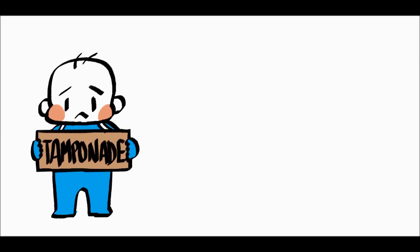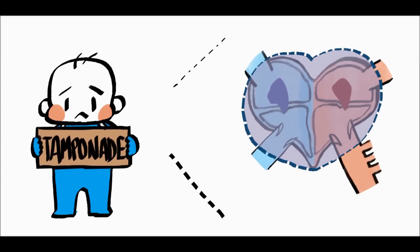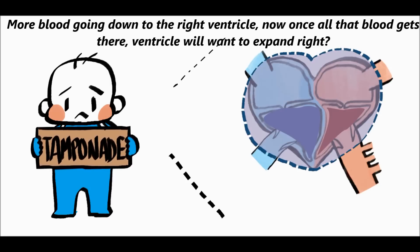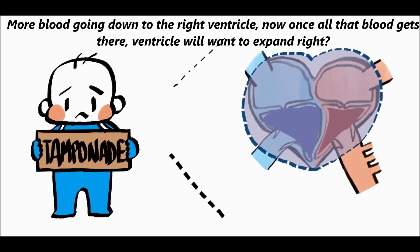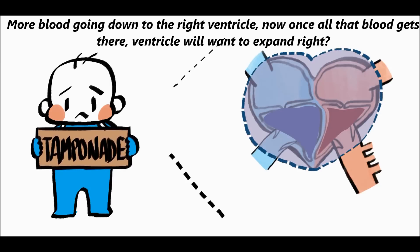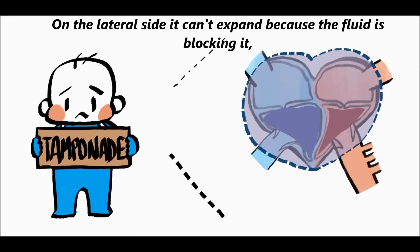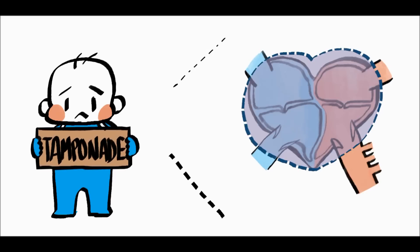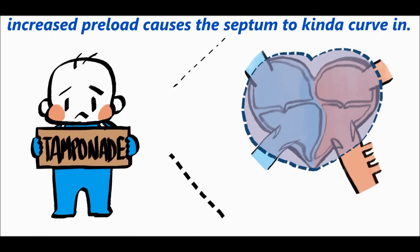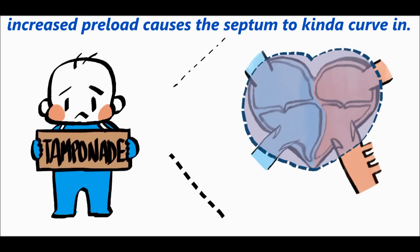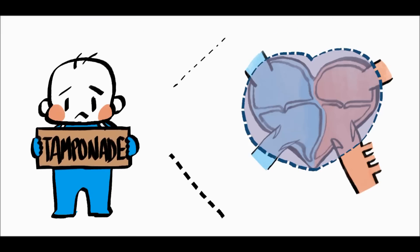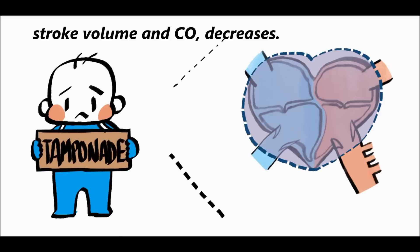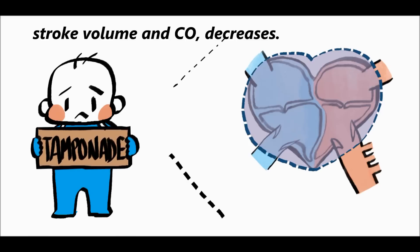If a patient has tamponade, and now more blood is coming back to the right atrium, that means more blood going down to the right ventricle. Now once all this blood gets there, the ventricle will want to expand. Well, on the lateral side, it can't expand because the fluid is blocking it. But look at the septal side. What happens is that the increased preload causes the septum to kind of curve in. When that happens, what do you think happens to the left ventricle's volume? It decreases. So what happens to the stroke volume and cardiac output? Decreases. That's why you have the exaggerated drop in blood pressure.